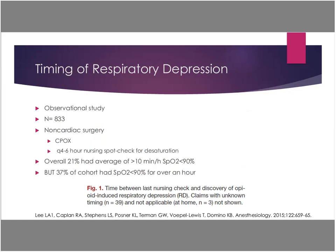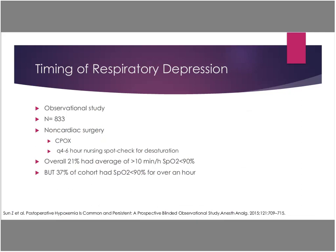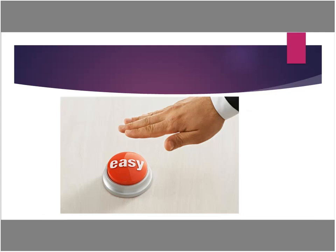There was another interesting observational study of post-surgical patients with 800 patients. They basically hid a continuous pulse oximeter — not showing what the numbers were — and then had routine every four-to-six-hour nursing spot checks for desaturation. They showed that 21% of patients had a desaturation greater than 10 minutes, and 37% had a desaturation over an hour. Basically, we're really missing a lot of these desaturation events. You might think the answer is to put on a pulse oximeter, but not so fast.